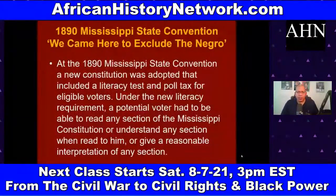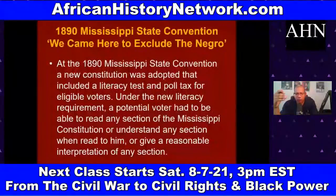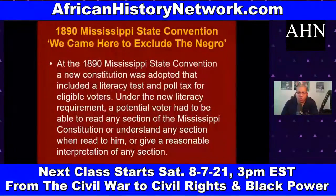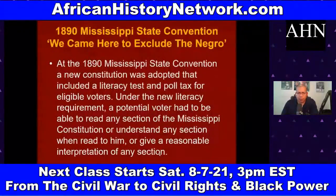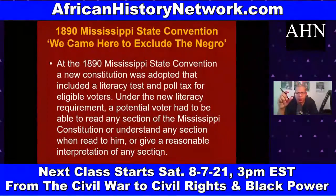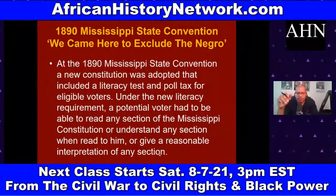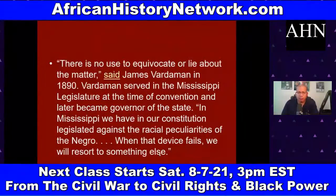In subsequent Supreme Court decisions around 1883, various sections of the KKK Act of 1871 were declared unconstitutional — but portions remain on the books and are still being used today. We talk about the Mississippi State Convention of 1890, where Solomon Saladin Calhoun, the white judge who presided, said: 'We are here to exclude the Negro.' They were trying to disenfranchise African Americans in Mississippi — and they're still trying to do it today.